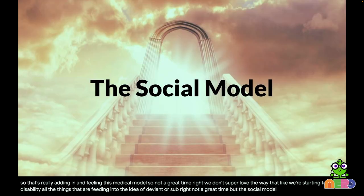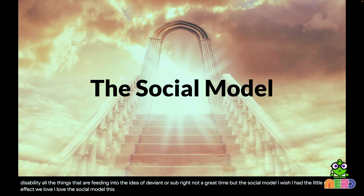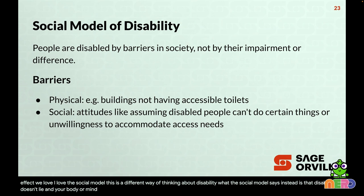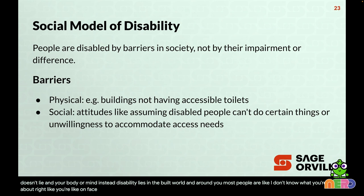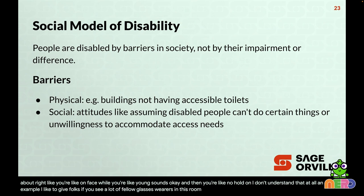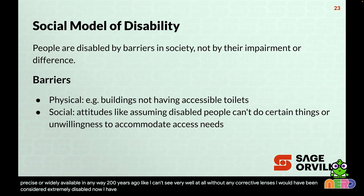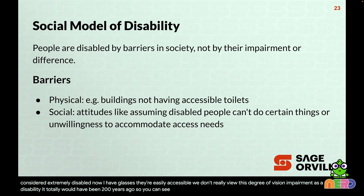The social model is a different way of thinking about disability. Instead of saying disability lies in your body or mind, the social model says disability lies in the built world around you. An example: if you see fellow glasses-wearers in this room — 200 years ago, glasses were not accessible, precise, or widely available. Without corrective lenses, I would have been considered extremely disabled back then. Now I have glasses, easily accessible, and we don't view this degree of vision impairment as a disability. My eyes would be exactly the same, but whether I'm disabled is completely dictated by the built world.